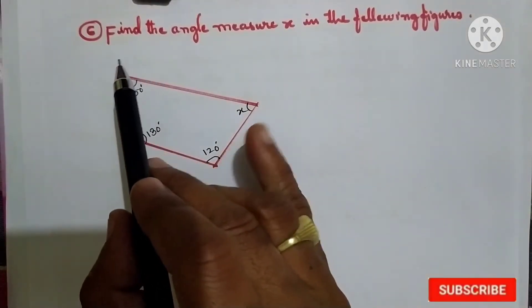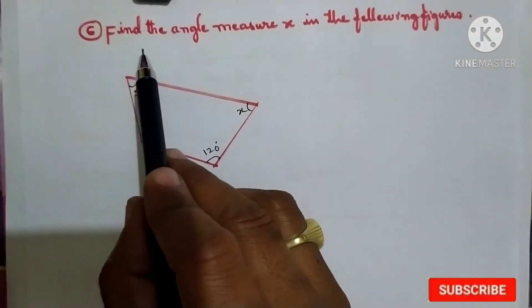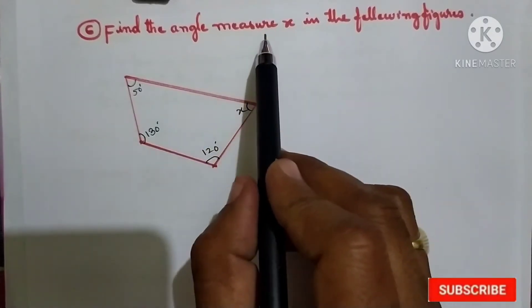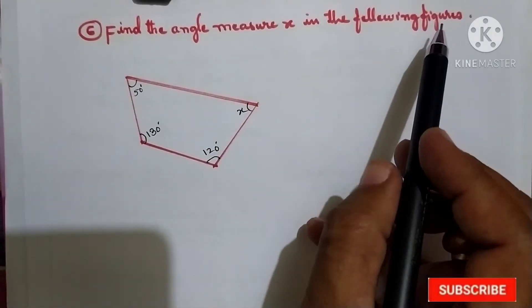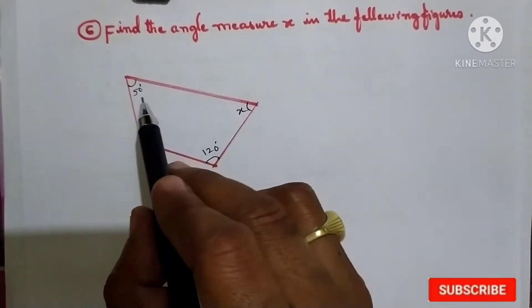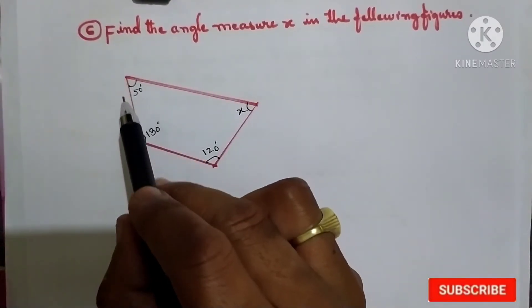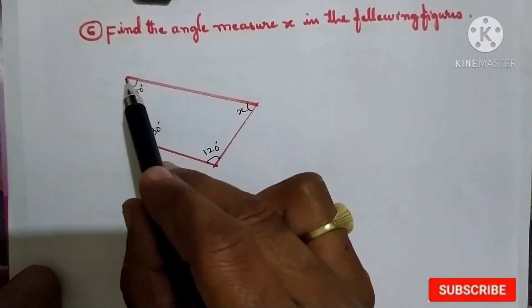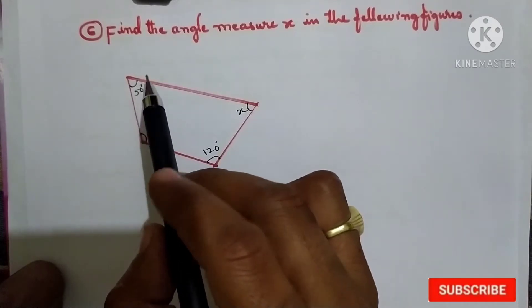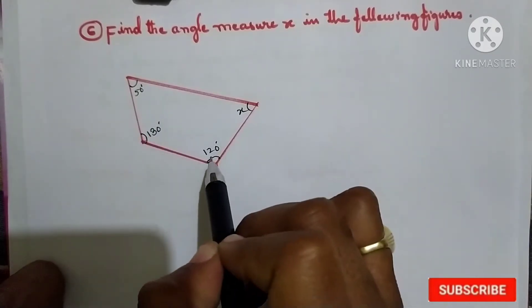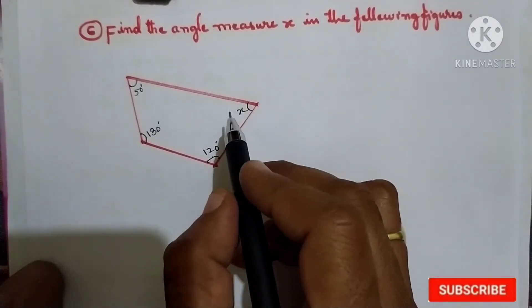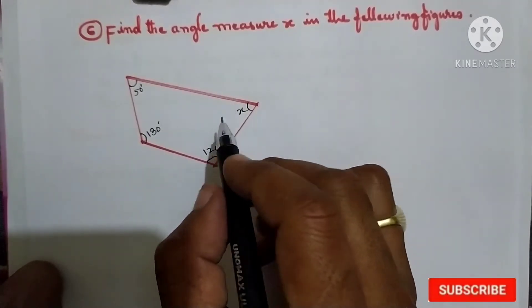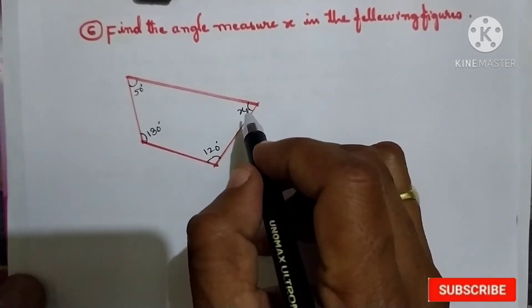Question number 6: find the angle measure x in the following figures. Now, in the first figure, here is given one quadrilateral with one angle 50 degrees, 130 degrees, 120 degrees, and here x. So what we should do here — we should find the value of x.